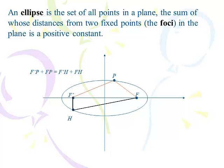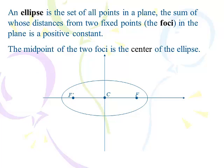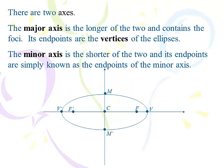A lot of people just think it's a squished-down circle, which really it is. The midpoint of the two foci is the center of the ellipse. There are two axes: the major axis and the minor axis. The major axis connects the vertices, which are just outside the foci and on the major axis. The minor axis is the shorter of the two — M and M' are just the endpoints of the minor axis, not called vertices. The major axis also contains the foci.